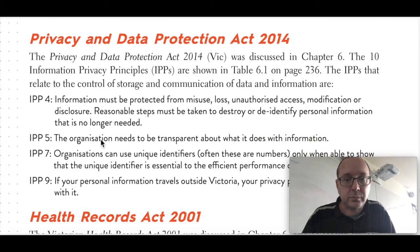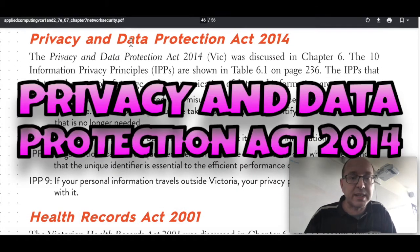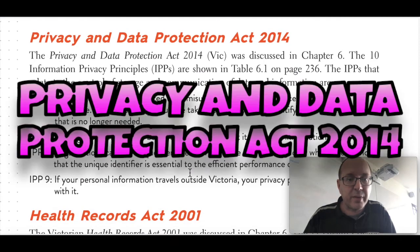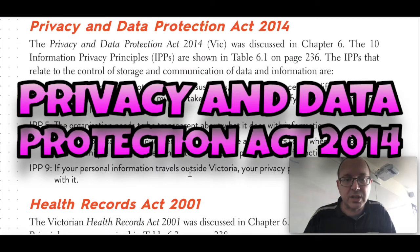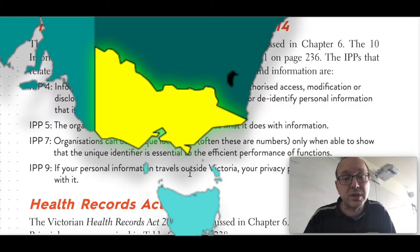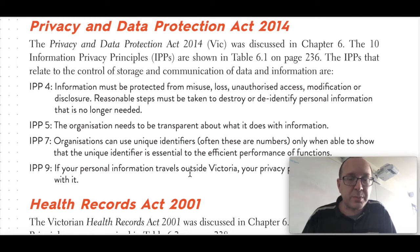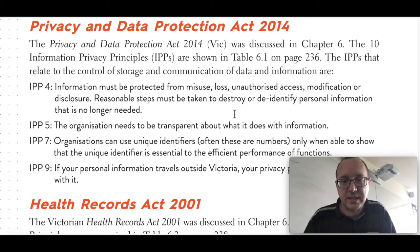The Privacy and Data Protection Act 2014 in Victoria has 10 Information Privacy Principles. Like the Australian Privacy Principles, this has its own set of principles.